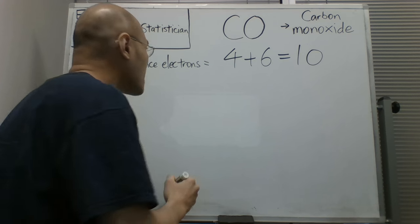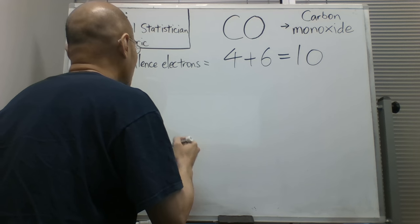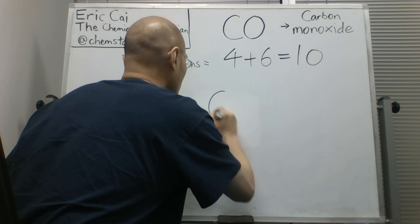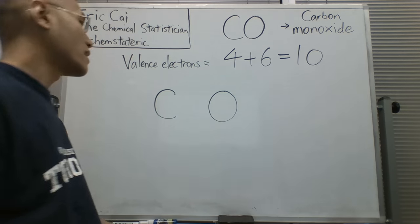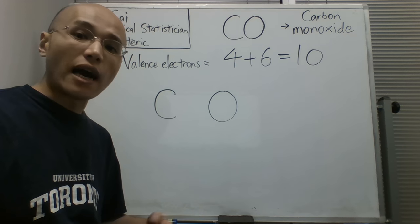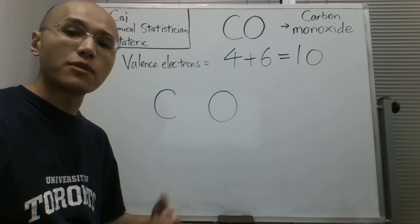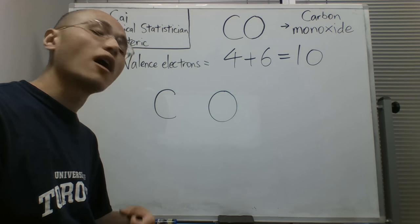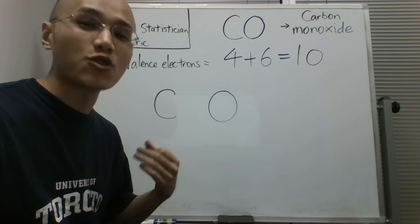Now, let's actually draw the atoms in the Lewis dot structure. Here's the carbon, here's the oxygen. As a good starting point, I encourage you to assume that the bond between the atoms is a single bond. That's not necessarily true, but it's a good starting point.